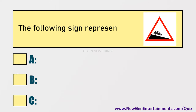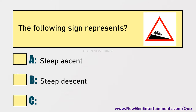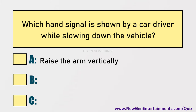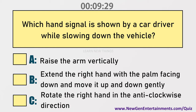The following sign represents: Options are: A) Steep ascent, B) Steep descent, C) Height limit. Answer: Option B, Steep descent. Which hand signal is shown by a car driver while slowing down the vehicle? Answer: Move the right hand with the palm facing down, moving up and down gently.